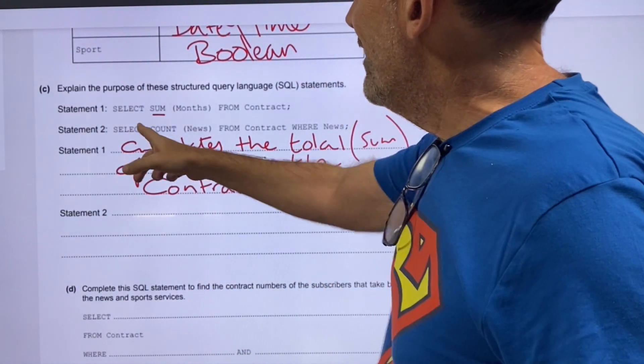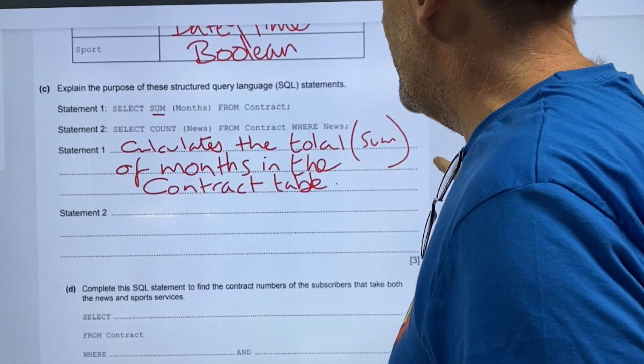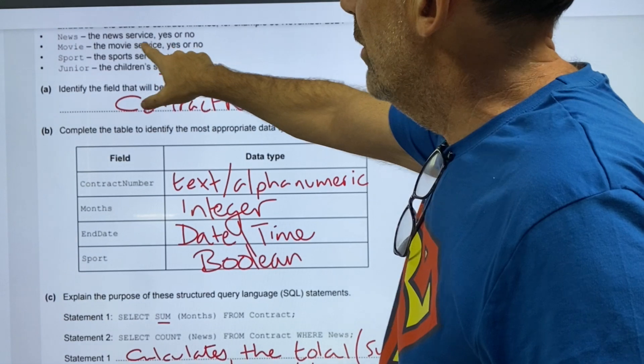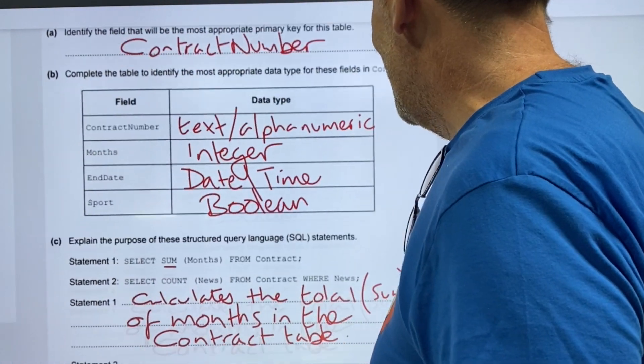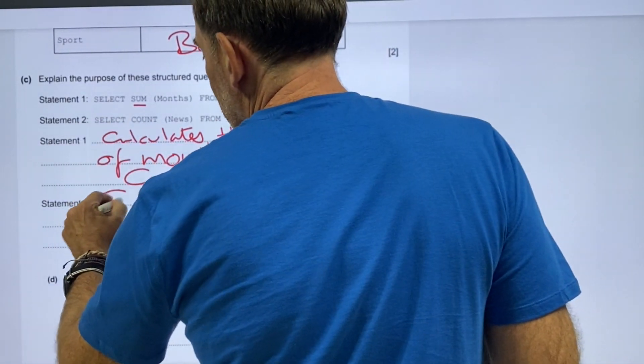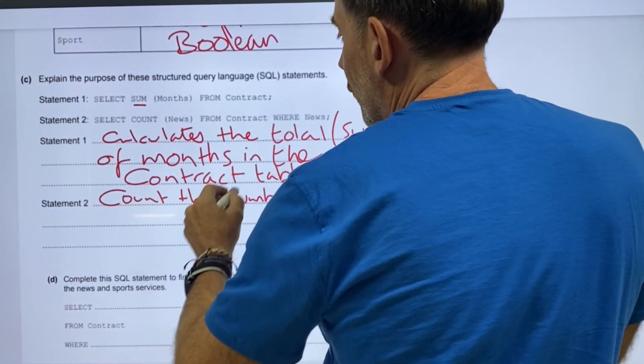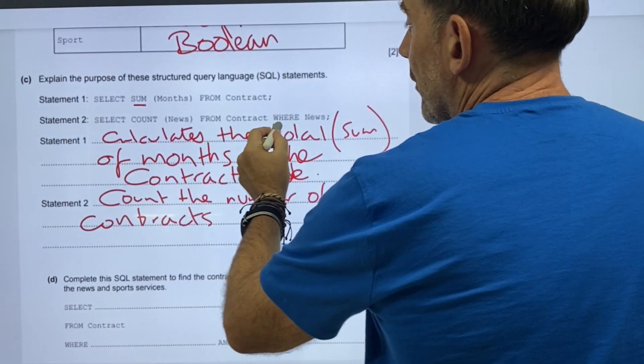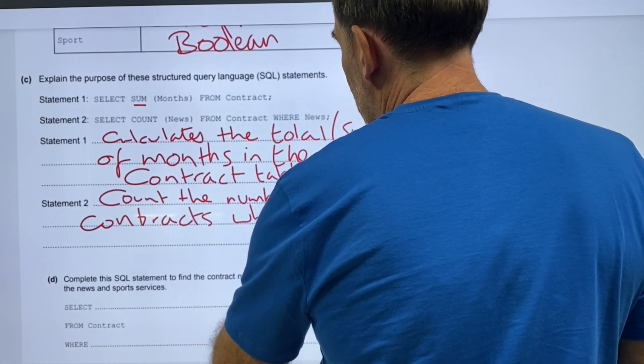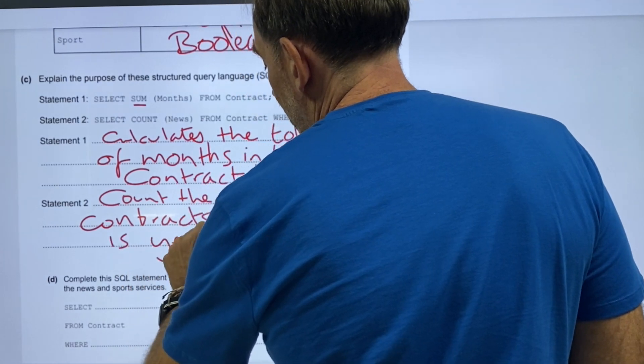And number two, select count news from contracts where news. From contracts where news. What does that mean? Where news. Well, because it says where news, I'm assuming it means where news is yes. So, this is going to count the number of contracts where news is yes and true.